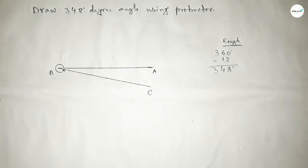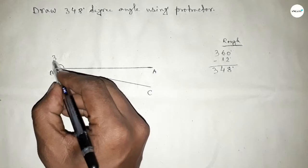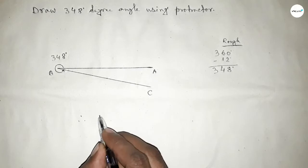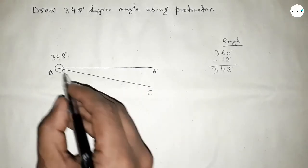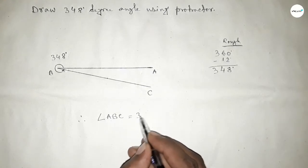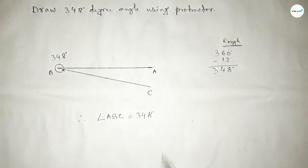Angle ABC, this is 348 degree angle. Therefore, angle ABC equals 348 degrees. That's all. Thanks for watching. If this video is helpful to you, then please share it with your friends. Thanks for watching.